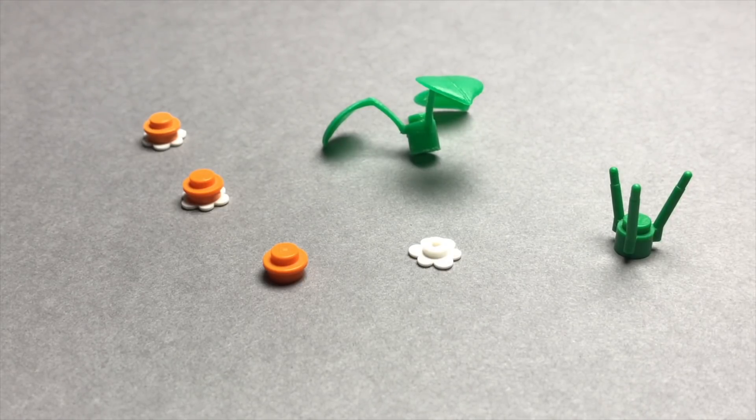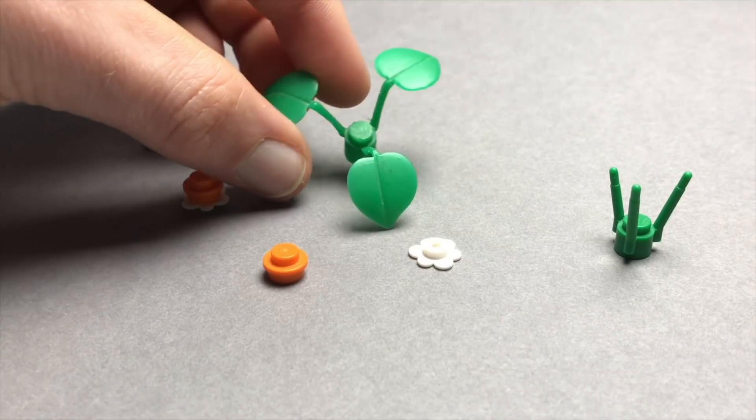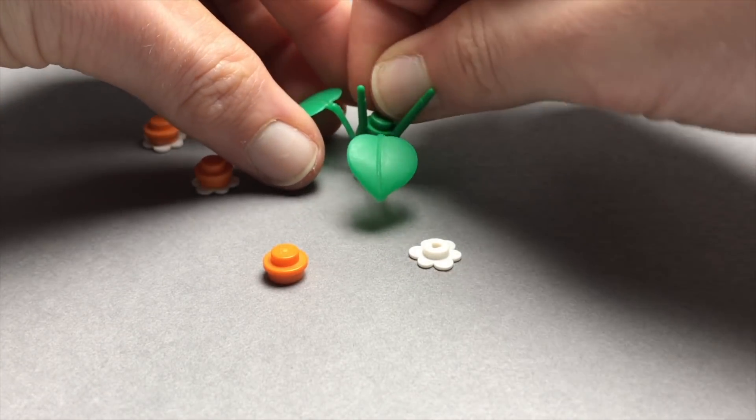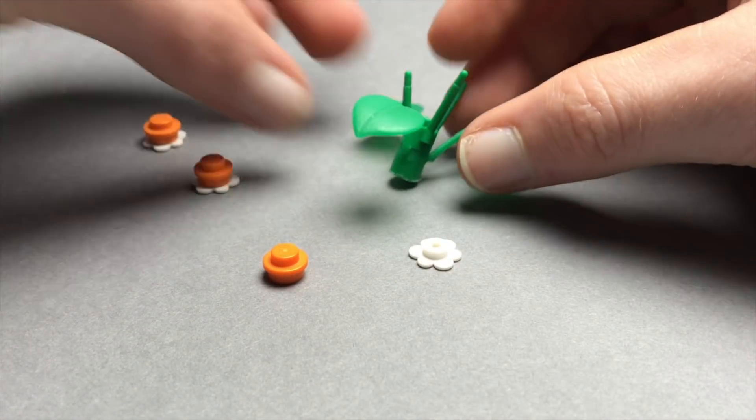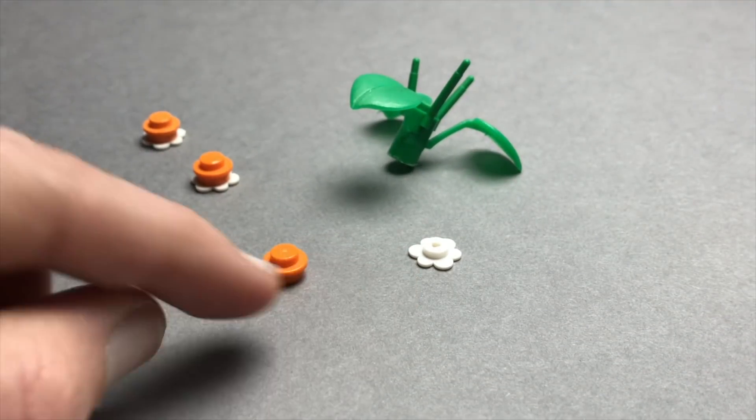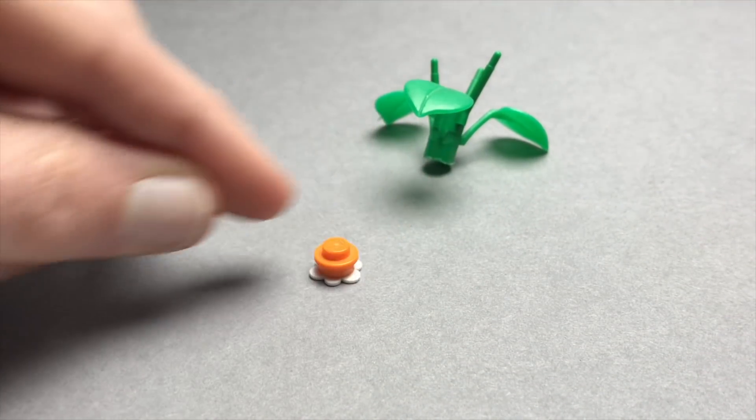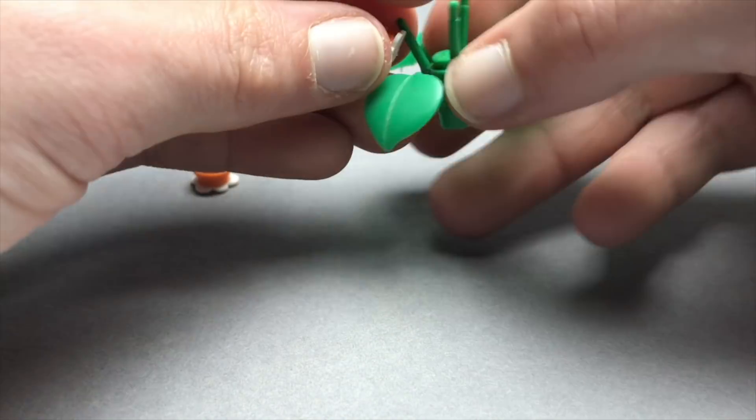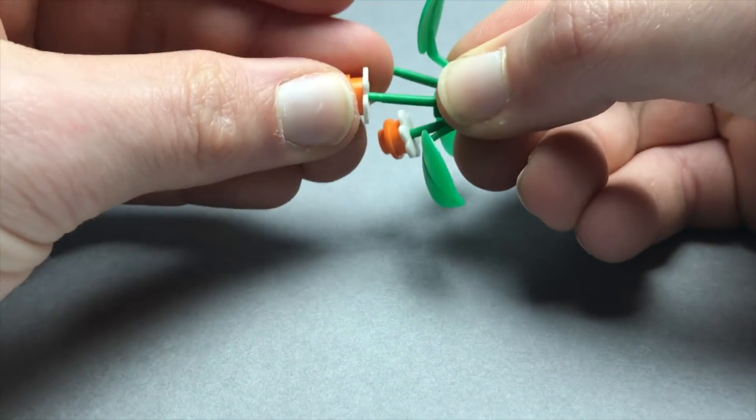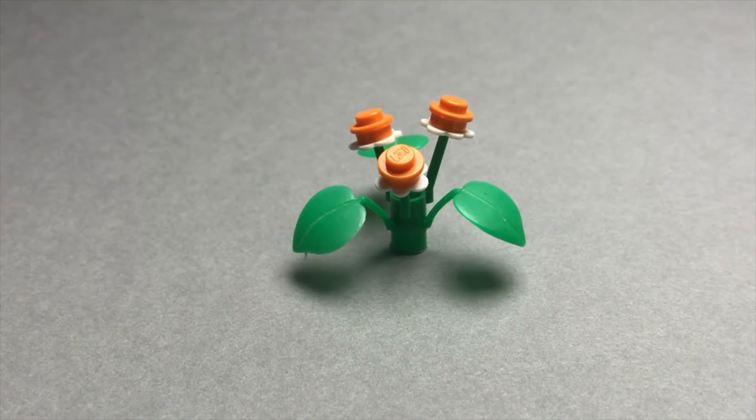You can make a really cool flower by taking one of these large leaf pieces and then a flower stem piece on top. Instead of just placing regular white flowers, if you put something like an orange stud on top, it will look much nicer and there you go.